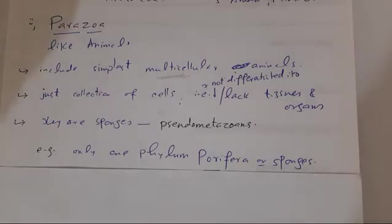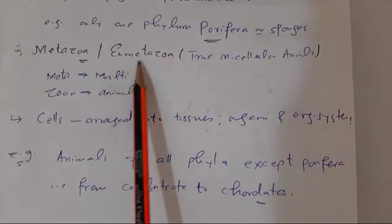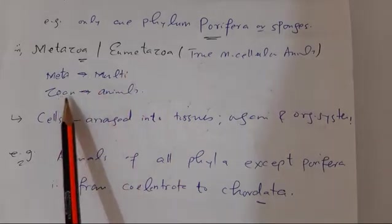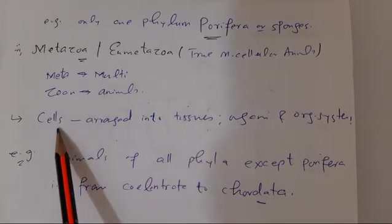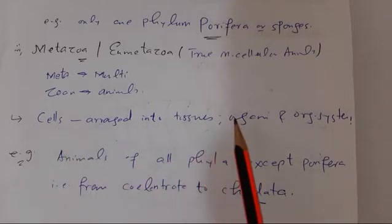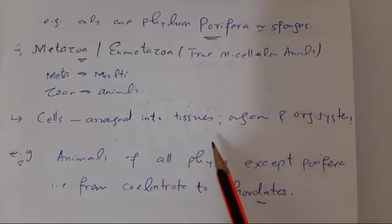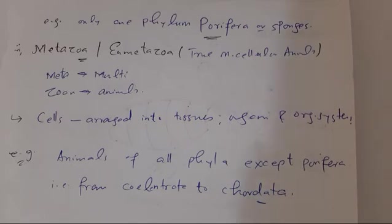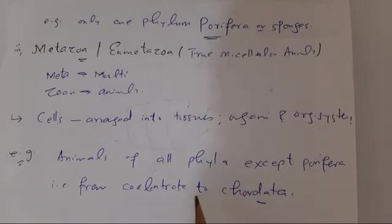The third group is Metazoa or Eumetazoa. 'Meta' means multi, 'zoa' means animals — so Metazoa means multicellular animals. They are called true multicellular animals because their cells are arranged into tissues, organs, and organ systems, unlike Parazoa which are just a collection of cells not differentiated into tissues and organs. For example, animals of all phyla except Phylum Porifera — from Phylum Cnidaria to Phylum Chordata — are Eumetazoans.